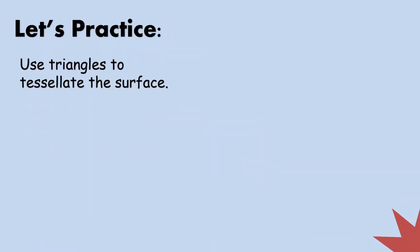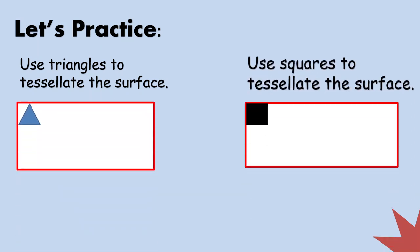Now, let's practice. I want you to try to tessellate the surface. Use triangles to tessellate the surface. And use squares to tessellate the surface. Let's do it together. So, we can just fill in the space using triangles. Triangles all over.